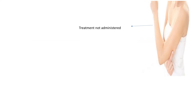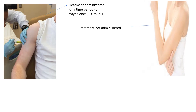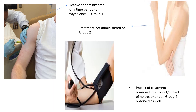Let's say one group was not given a drug and the other group was given a drug. This drug was to see if it lowers blood pressure or not. So we took two groups of people — one group was not given the drug that lowers blood pressure, and the other group was given the drug as the treatment. After the treatment is given to group one and not administered to group two, both groups are then checked for the impact of the treatment.